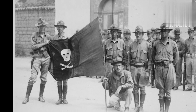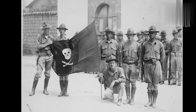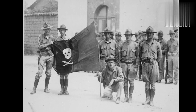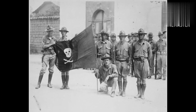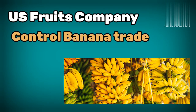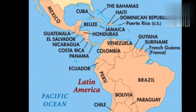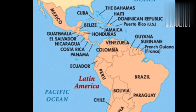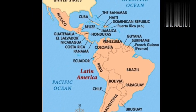In the early 20th century, American fruit companies such as the United Fruit Company and the Standard Fruit Company began to expand their operations in Latin America and the Caribbean. These companies controlled vast plantations and controlled much of the region's banana trade, which was an important export for many countries in the region. However, the unstable political climate in many of these countries made it difficult for the fruit companies to operate without interference.